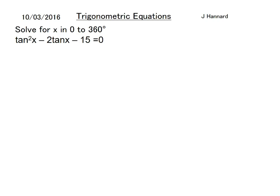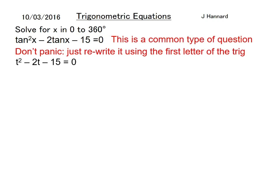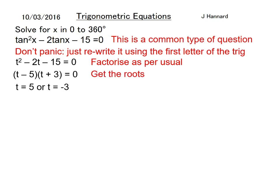But these are even tougher. Solve for x in 0 to 360. Now you would be panicking there when you see tan²x minus 2tan x minus 15 equals zero, but it's a very common type of question. Don't panic, just rewrite it using the first letter of the trig: t² minus 2t minus 15 equals zero. And everybody knows how to solve that quadratic, you can just factorize it. So t minus 5 and t plus 3 equals zero.